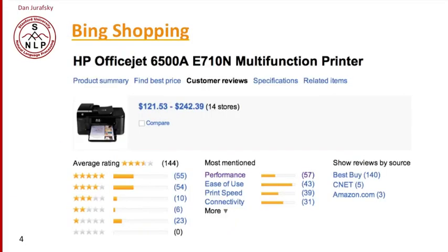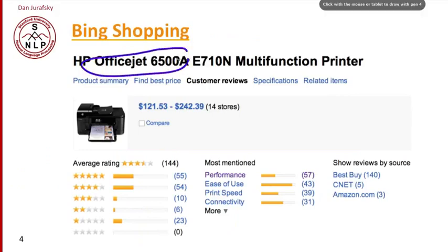We can see this for many other products, not just Google. Bing has the same thing for the same printer. We can extract aspects like positive performance, ease of use, and print speed, and summarize from the various reviews the positive and negative sentiment.